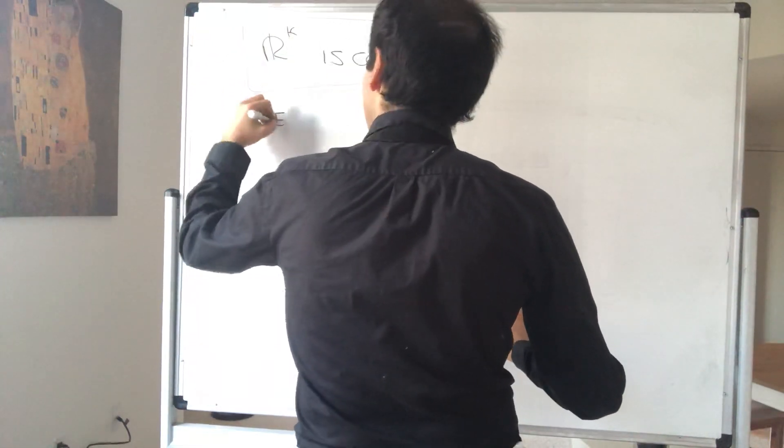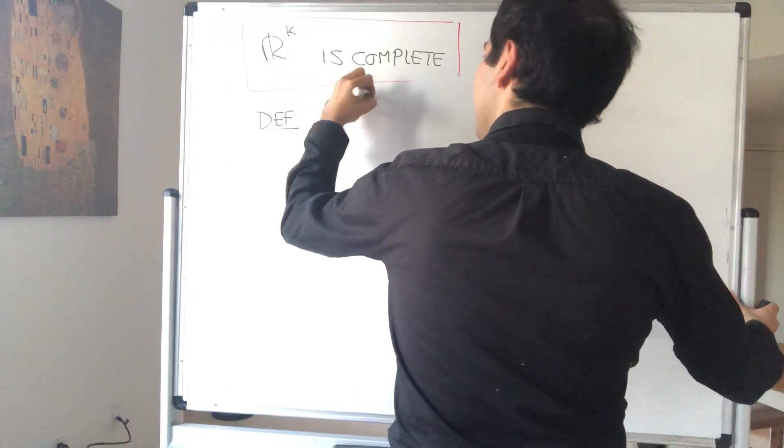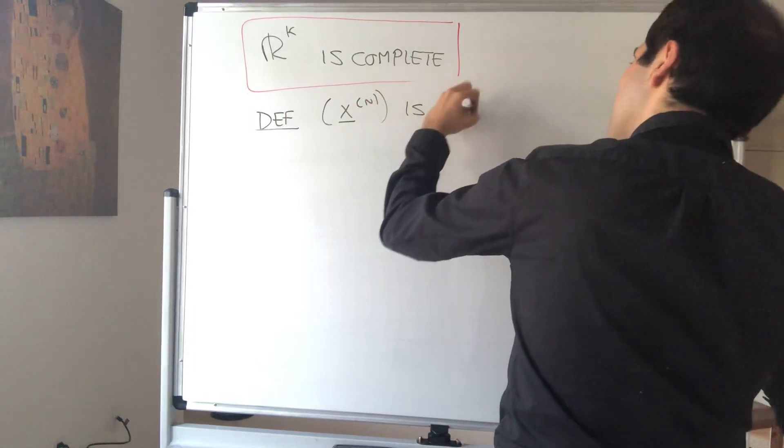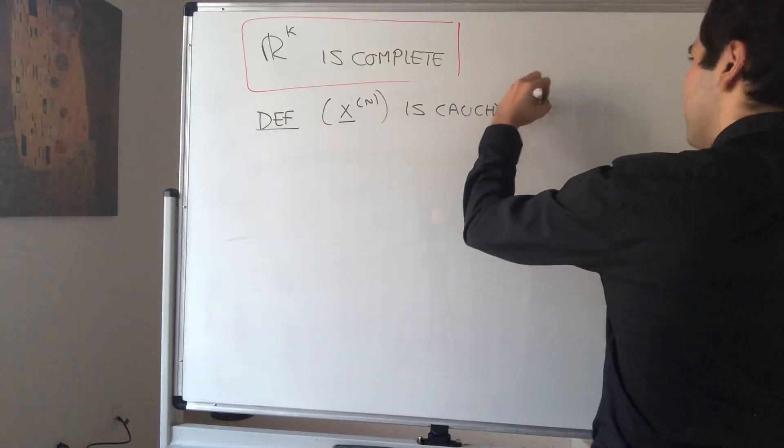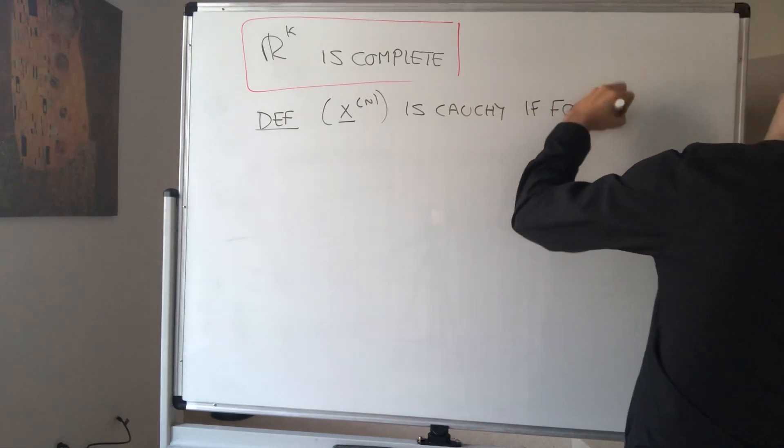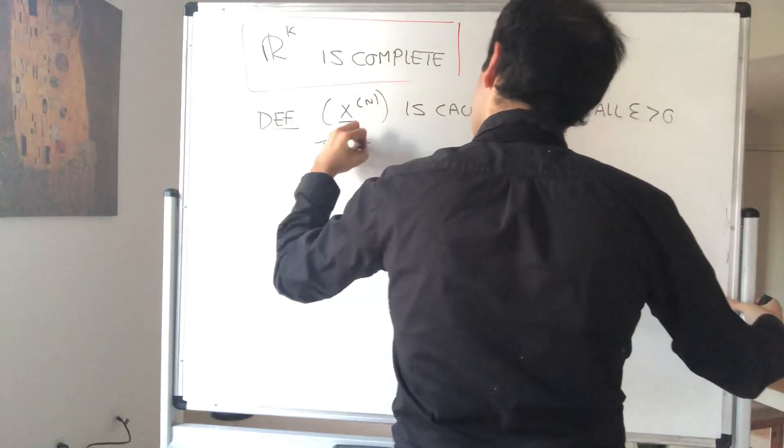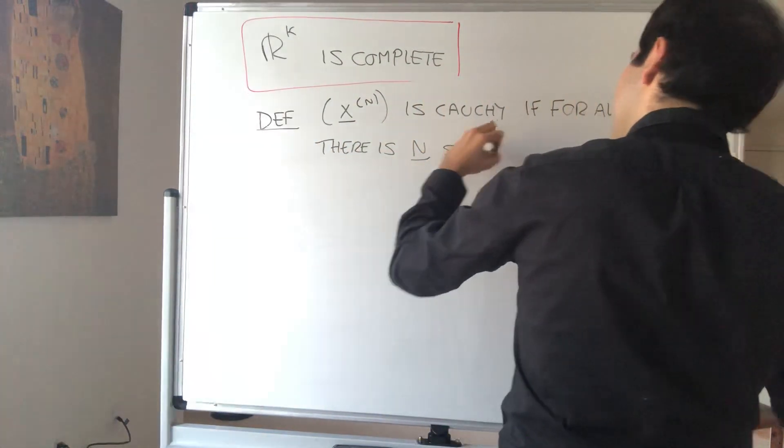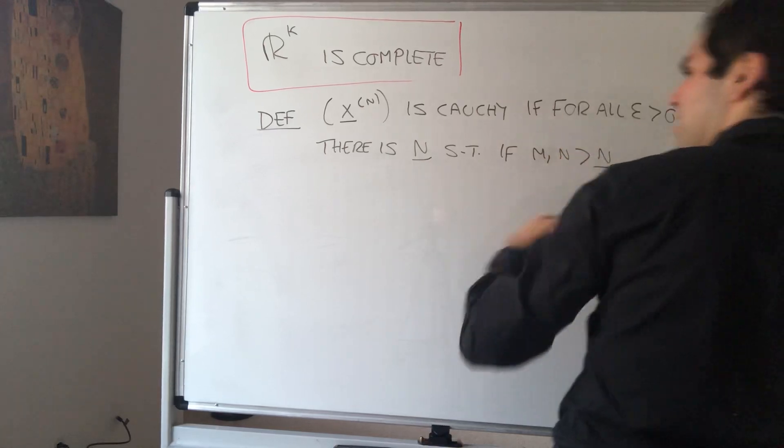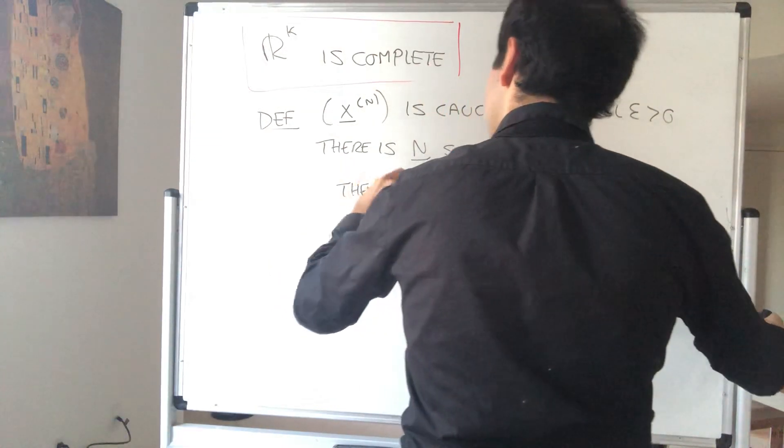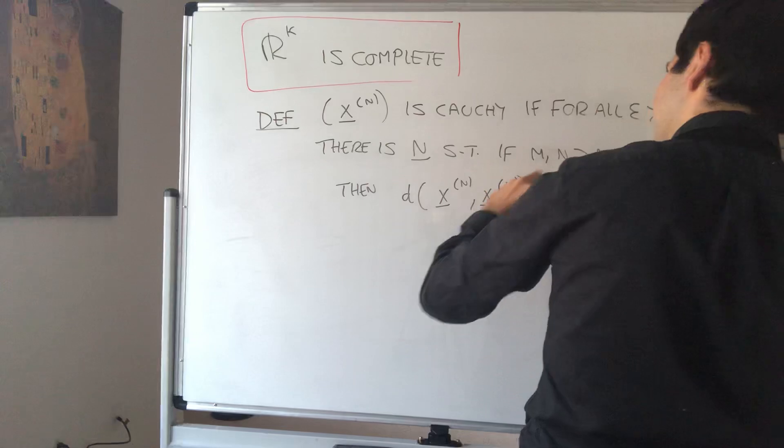Let me first remind you what it means for a sequence to be Cauchy. X_n in R^K is Cauchy if eventually all the values of this sequence get close together. So if for our epsilon there is a capital M such that if M and N are after that threshold, then the distance between X_n and X_m is less than epsilon.